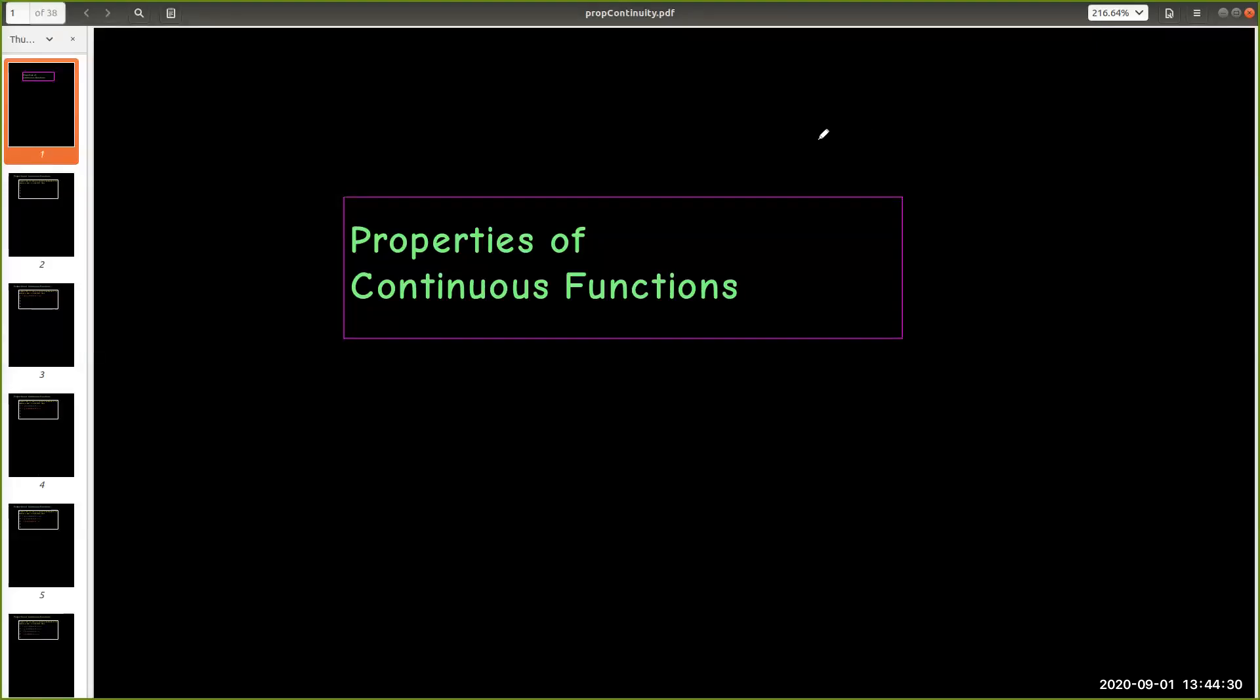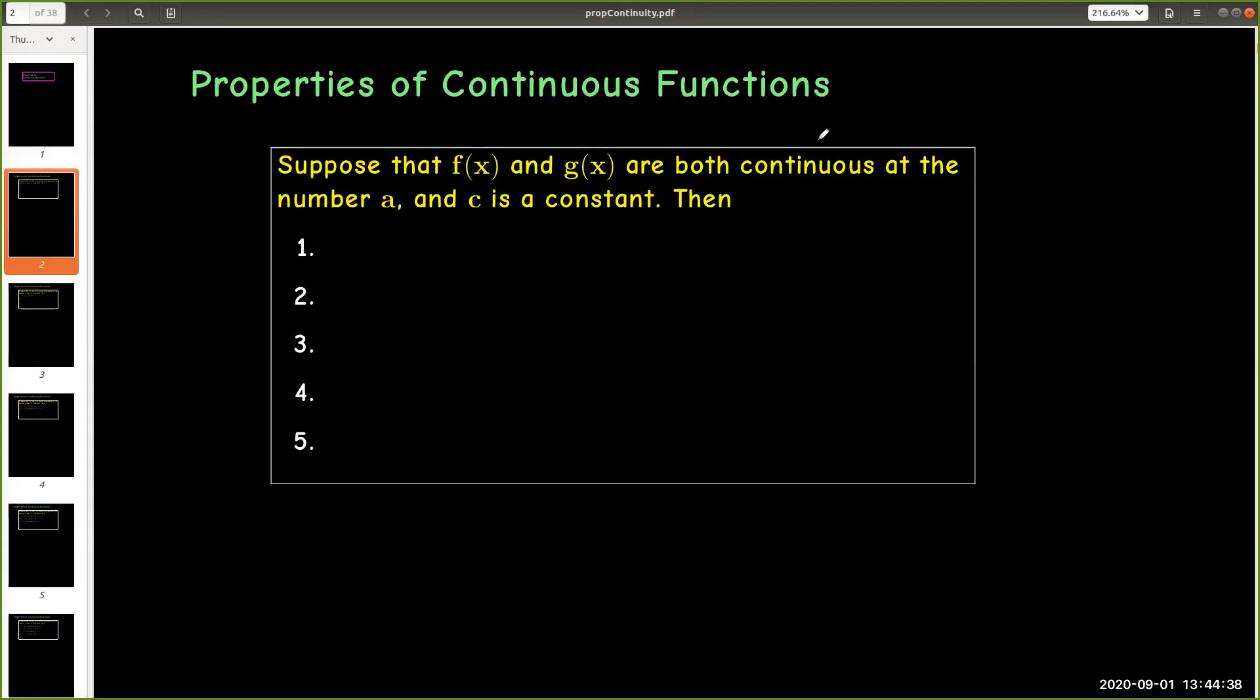In this short video we're going to explore the properties of continuous functions. If I have two continuous functions, f and g, they are both continuous at the number a and c is a constant, then what can I say?